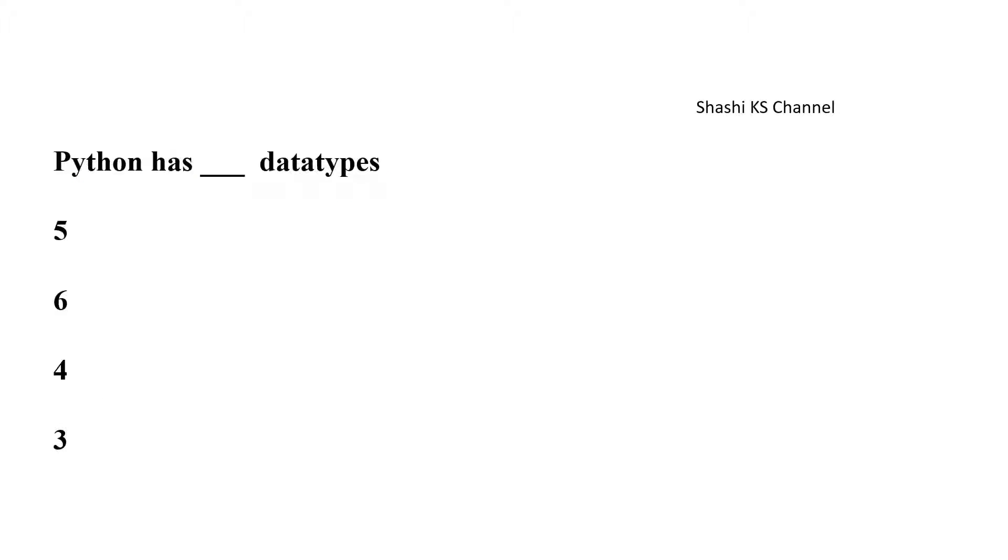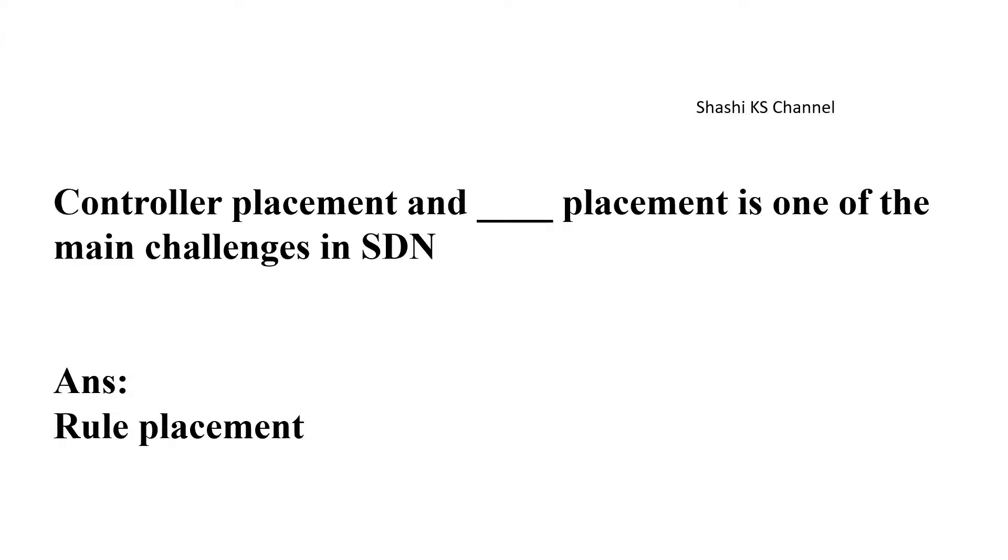Next question is python has dash data types five or six or four or three. The answer to this is python has five data types. Next question is controller placement and dash placement is one of the main challenges in SDN. The right answer to this is rule placement.